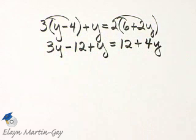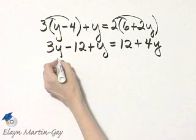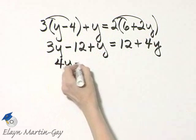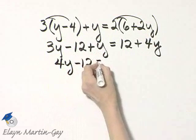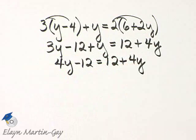Do we have any like terms that we can combine on either side of the equation? The answer is yes, 3y and y, that's 4y, minus 12 is equal to 12 plus 4y.